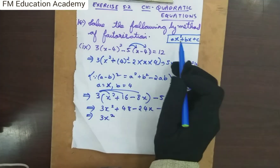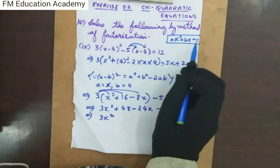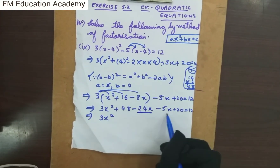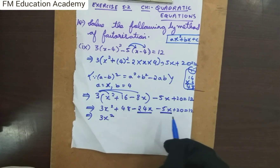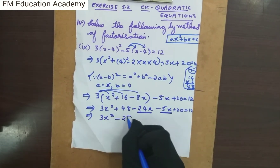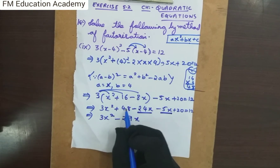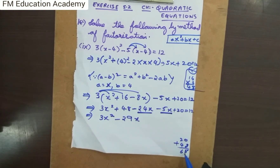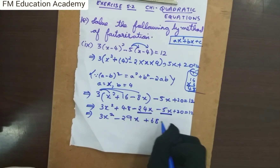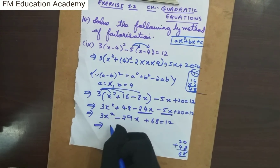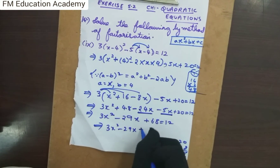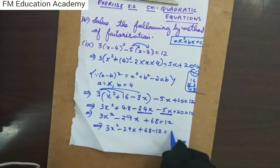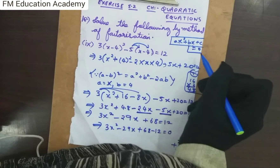Now combining like terms: the x² term is 3x². For the x terms, −24x and −5x have the same sign, so add: −29x. For the constant terms, 20 + 48 = 68. So we have 3x² − 29x + 68 = 12. Moving 12 to the left side, it becomes minus 12. So 68 − 12 = 56, giving 3x² − 29x + 56 = 0.